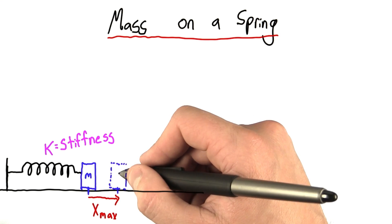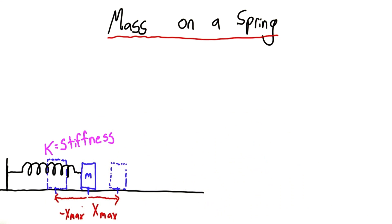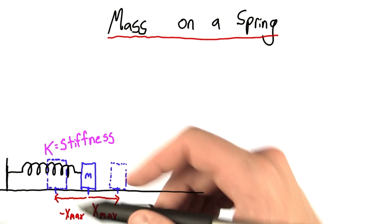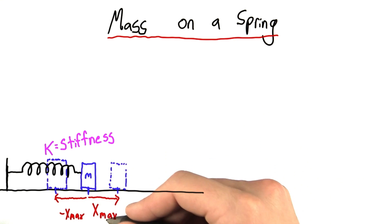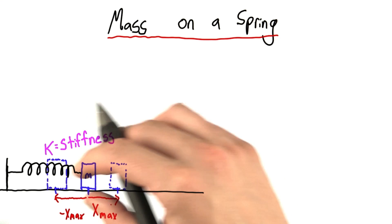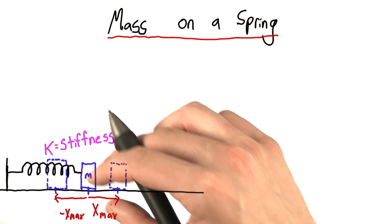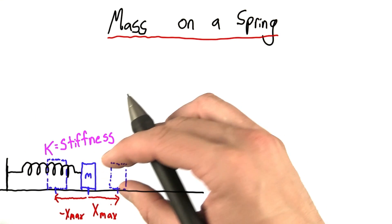In fact, this mass will swing through the equilibrium position here, and all the way back to a distance of minus x max from the equilibrium. So now you can see the reason why I call this max, because as these oscillations continue, this is the furthest from equilibrium that the mass will ever reach.